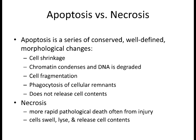Apoptosis versus necrosis: necrosis is not programmed cell death. Necrosis is a pathological death due to environmental conditions—lysis, inflammation. This causes damage to tissue. Apoptosis causes cells to package up key components without dumping all contents into the environment, and then the packaged contents are absorbed by various cells. Apoptosis is a very clean way of causing cell destruction. Necrosis is typically due to chemical, physical, environmental, or viral damage.